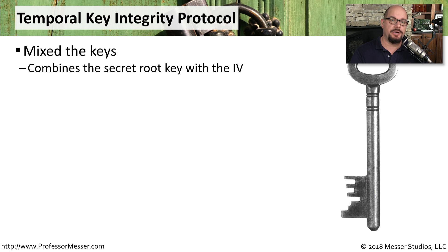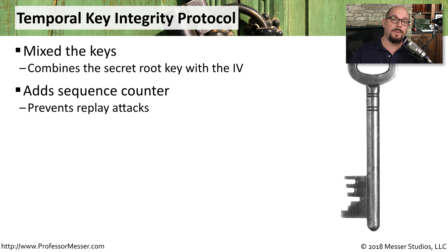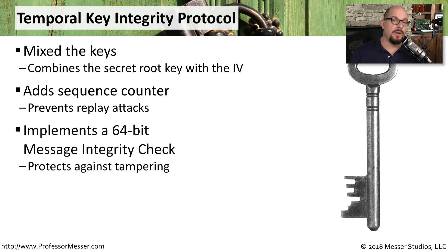TKIP was an interesting addition to our wireless encryption — something that wasn't available in WEP. It allowed us to combine a secret root key with our initialization vector. It also added a sequence counter so that no one could replay this traffic in an effort to gain access to the network. TKIP also included a 64-bit message integrity check to make sure that nobody tampered with the data as it was going through the wireless network.